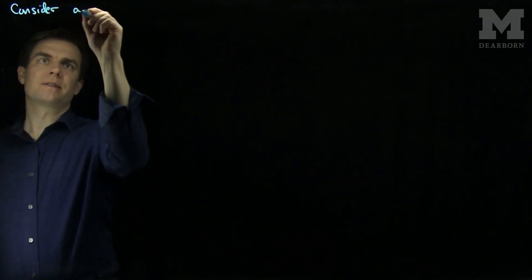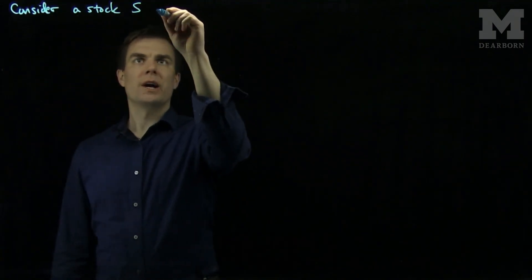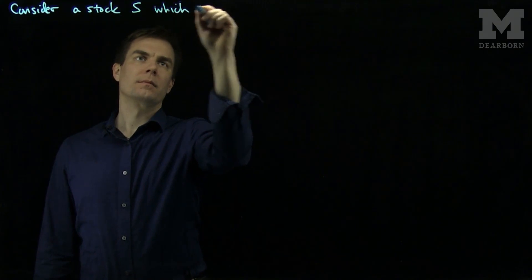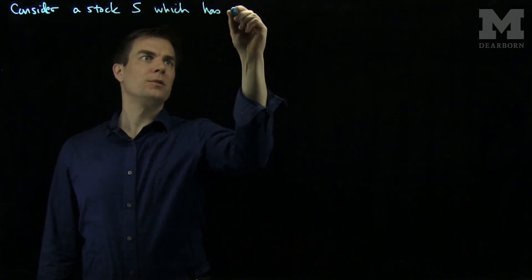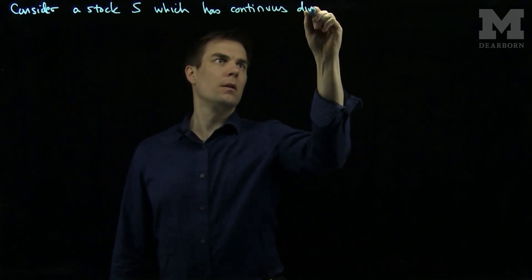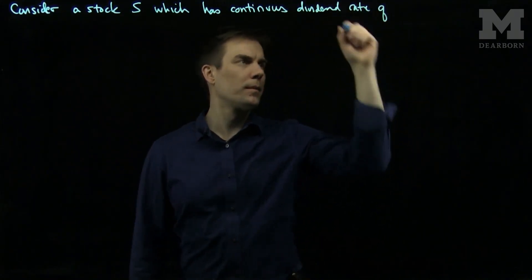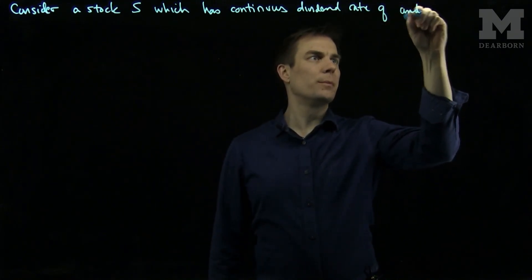Let's consider a stock S which has continuous dividend rate Q and follows geometric Brownian motion.